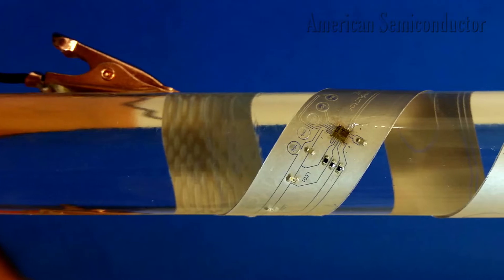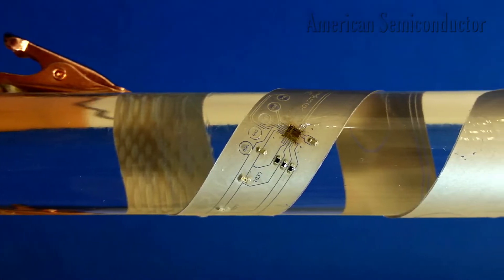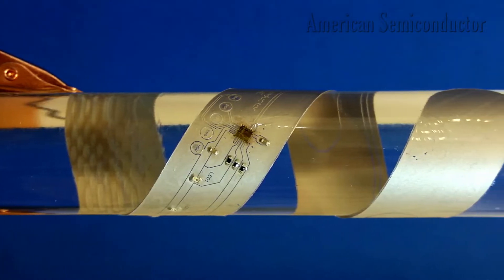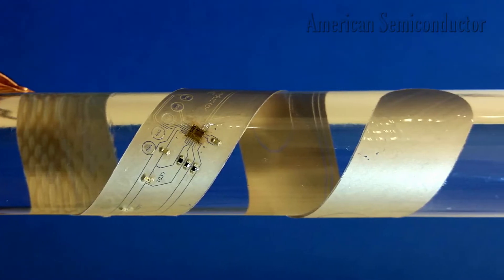The Flex System on Chip, or Flex SoC, is not only the world's most complex physically flexible integrated circuit, but it is also the world's first flexible IC with non-volatile high density flash memory. Why is this important?